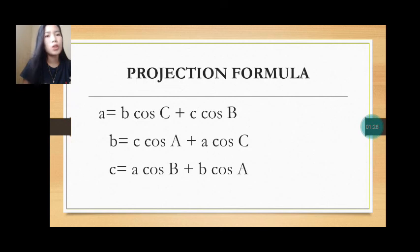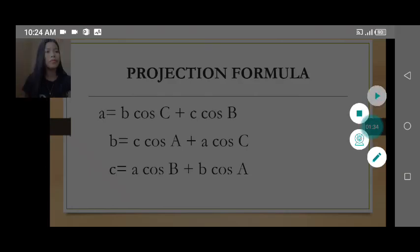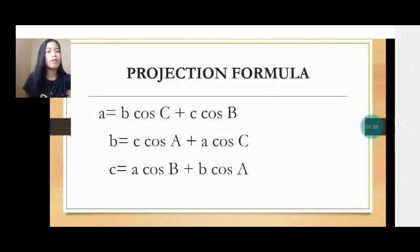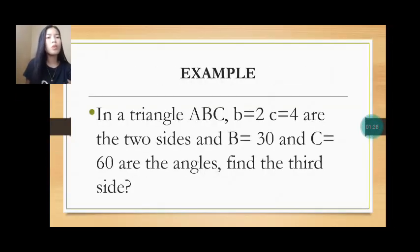Let's proceed to the example using this formula. In a triangle ABC, b is equal to 2, c is equal to 4, are the two sides, and B is equal to 30 degrees, and C is equal to 60 degrees, are the angles.